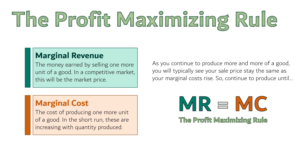In my experience, the profit maximizing rule is a difficult concept for people to fully grasp. It seems very simple, but it stands on a lot of complex ideas like implicit costs, diminishing marginal returns, and competitive markets. But it is true: if a firm wants to maximize their profits, they must meet this condition — they need to produce until marginal revenue is equal to marginal costs. Anything else is leaving money on the table.